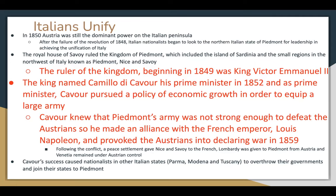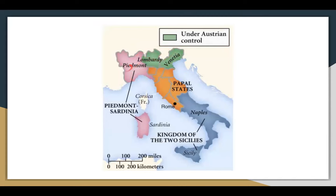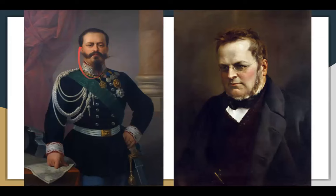Following the conflict, a settlement gave Nice and Savoy to the French, while Lombardy was given to Piedmont from Austria, and Venetia remained under Austrian control. Cavour's success caused nationalists in other states like Parma, Modena, and Tuscany to overthrow their governments and join Piedmont. On the map, Lombardy and Venetia were under Austrian control, while Piedmont-Sardinia is shown here. Victor Emmanuel II, Camillo di Cavour, and Louis Napoleon — notice they all have the same facial hair, which was apparently the style.